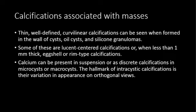Some of these calcifications have a lucent center. If the calcification is in the wall and the lucent center is less than one millimeter thick, it is called egg-shell or rim-type calcification. Oil cysts can contain calcification within the cyst, forming a fluid-calcium level. In the craniocaudal view it will appear amorphous, but in the oblique view there will be what's called a teacup appearance.